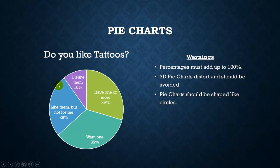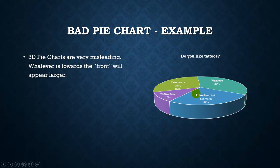When I make a 3D pie chart and put the 'like them but not for me' group towards the front, it looks like a very large proportion — over a third — even though it's only about 26%. That 26% looks nearly as large as the 35% group in the back, which it shouldn't. Anything towards the front gets extra shading and physically appears larger to give the perception of being 3D. Just avoid 3D pie charts altogether because they are deceptive.